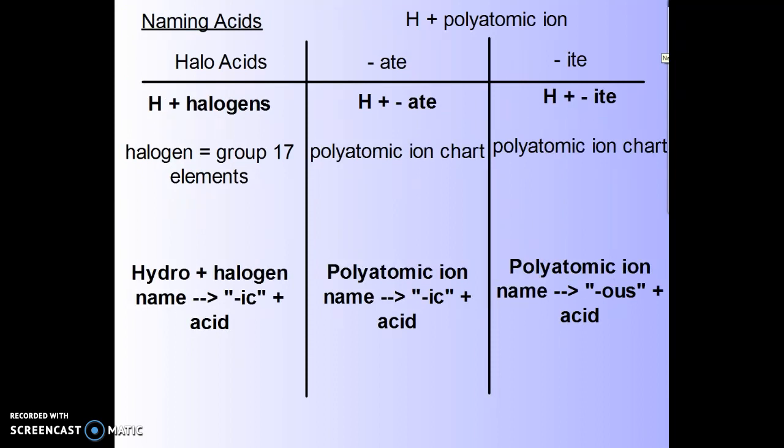Acids. These are compounds that have typically hydrogen attached to some negative ion. Hydrogen or H-plus ions are considered acid, and they usually are paired up with negative ion, which is called an anion. If we have what's called a halo acid, this is hydrogen, an H-plus ion paired with some halogen. These are the group 7A elements, all the ones that have a negative one charge on the periodic table.